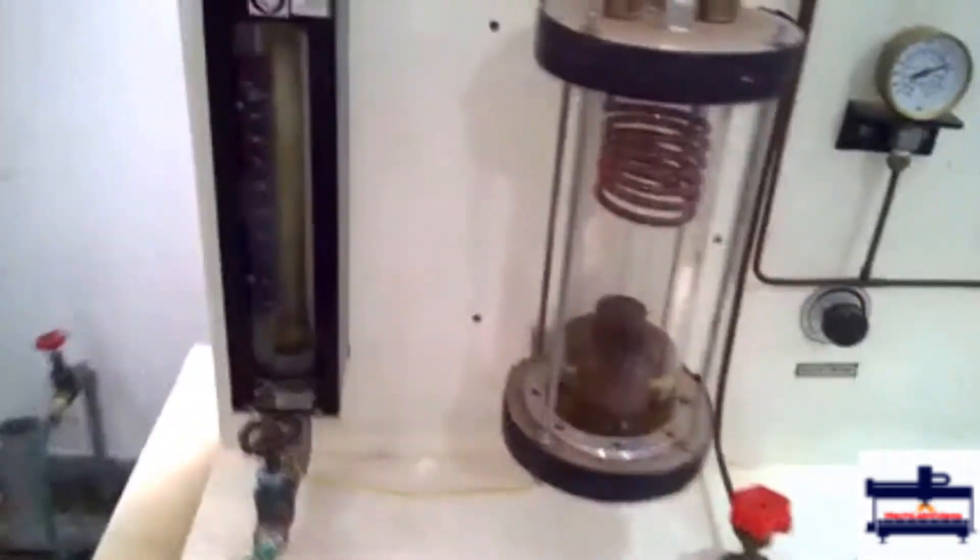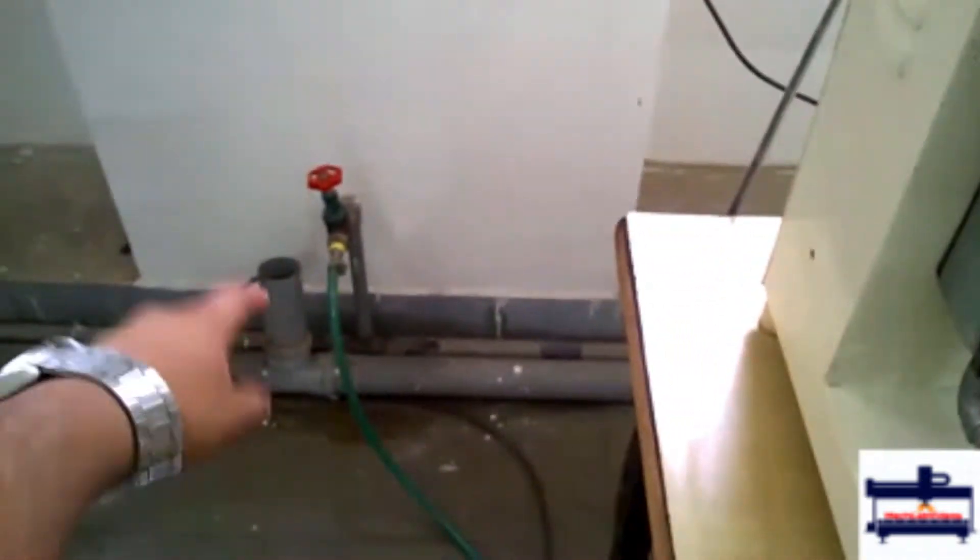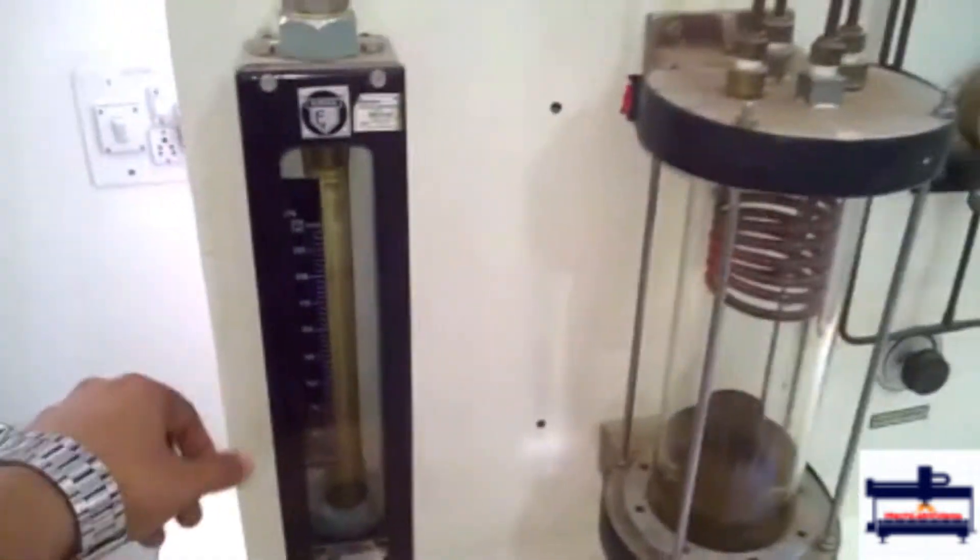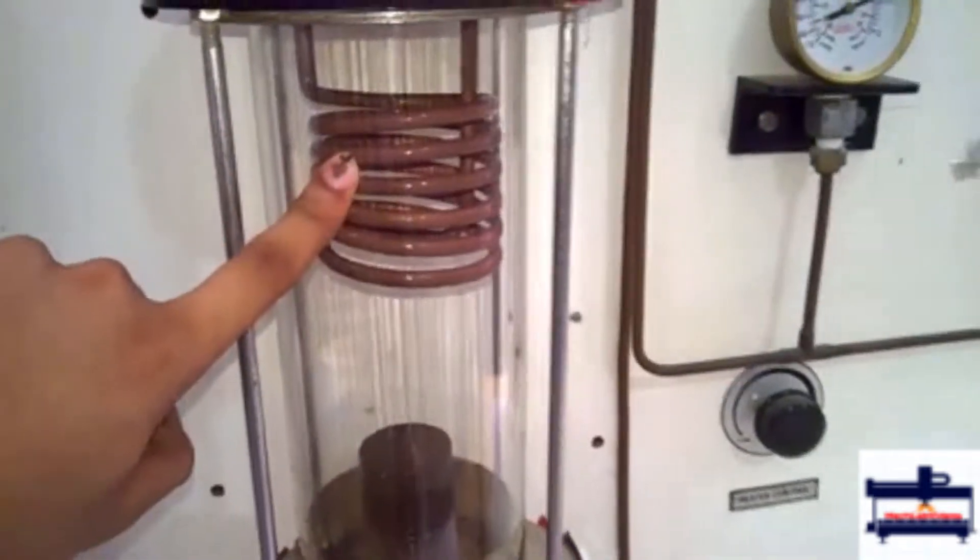Now what happens in this experiment is that this valve has to be open and the water comes in. We can measure the flow rate of water using this meter. The water from here flows into this and goes through this coil.